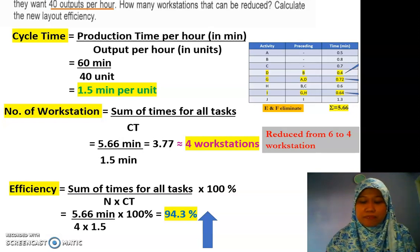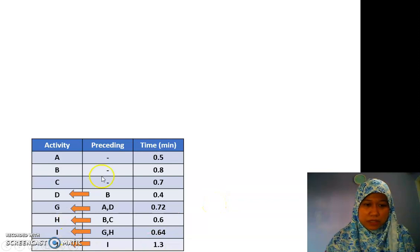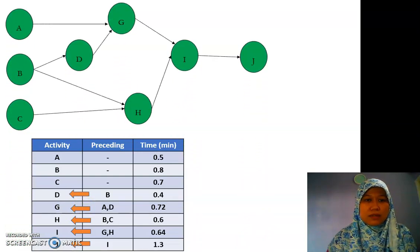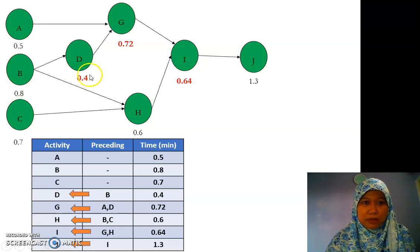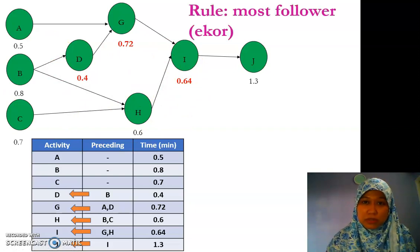Next we start to rearrange. First you need to draw the new precedence diagram because we made changes. Again, draw the arrows so you know that after B comes D and A, and after A and D comes G. These are all the tasks with the connections and arrows. The red ones are the tasks we changed, and remember E and F are eliminated — they're no longer in the picture.